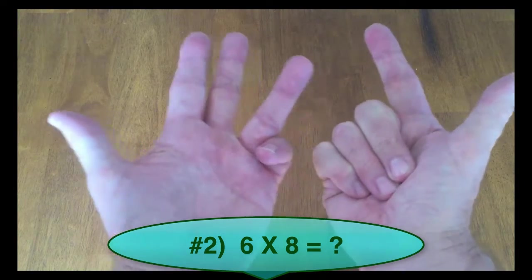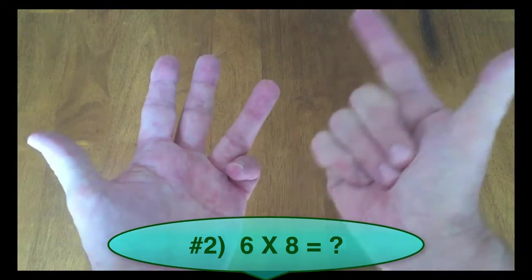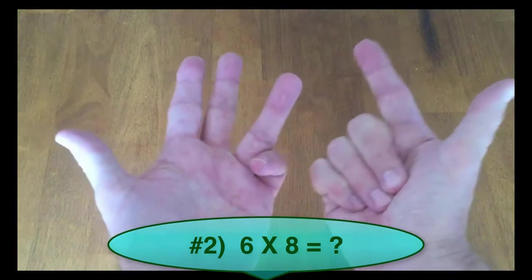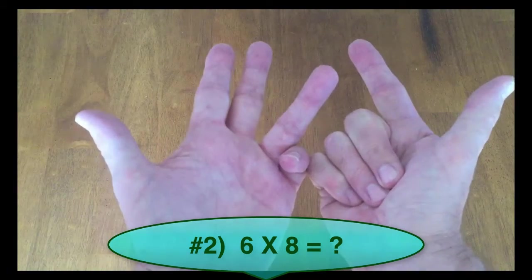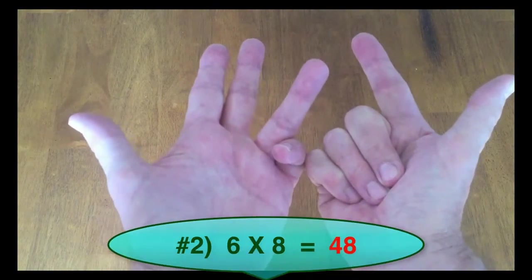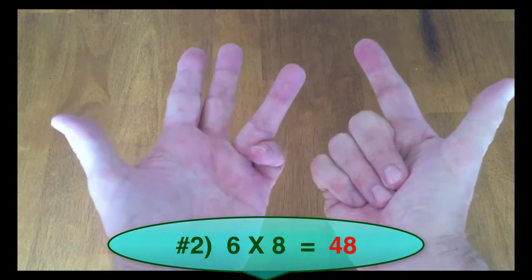Then we count our up fingers. 4 on the left hand, 2 on the right hand. 4 times 2 is 8. We add 8 to 40. That's 48. So 6 times 8 is 48. Pretty nifty, huh?